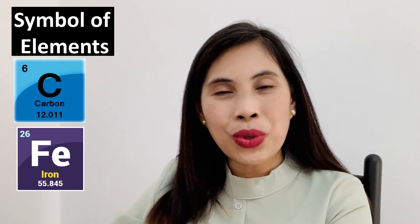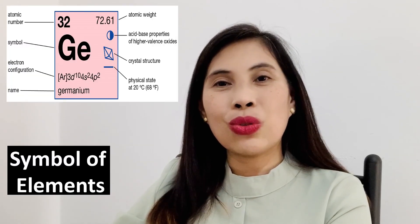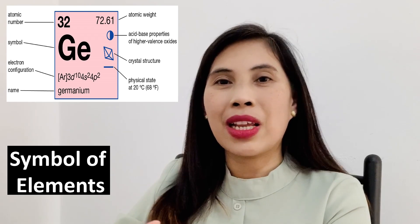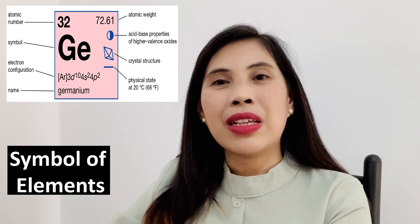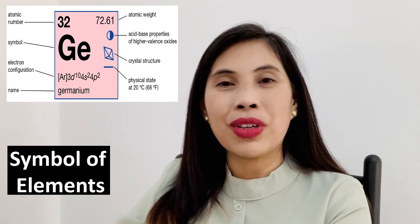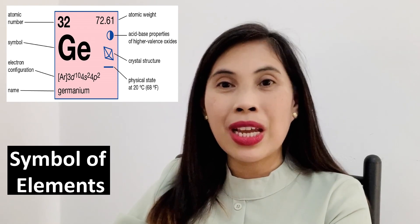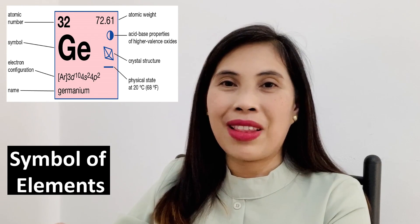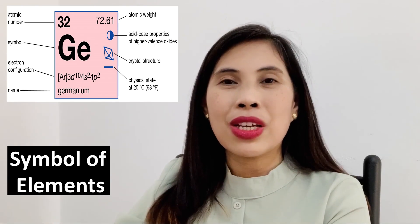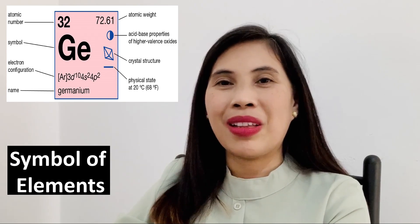Together with the symbol of the elements, it also has the atomic number, atomic mass, the electron configuration, the valence, the characteristics of the element, the structure, and the state of the elements. We can see all of this together with the symbol of the elements in the periodic table.